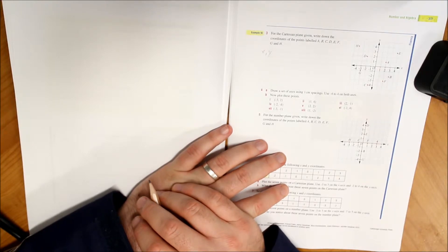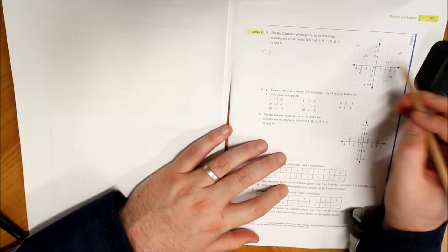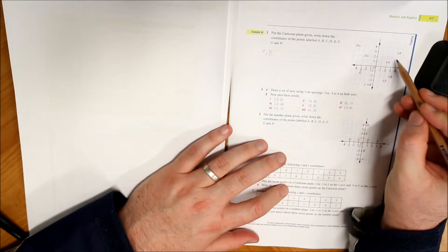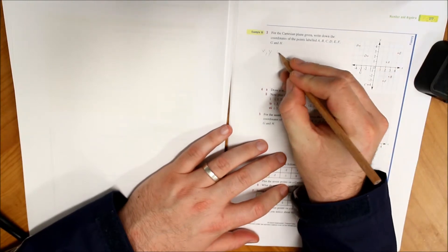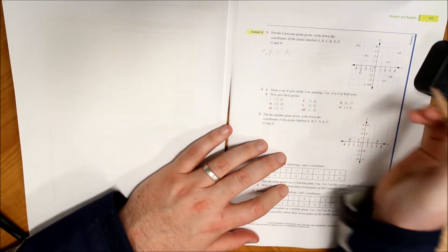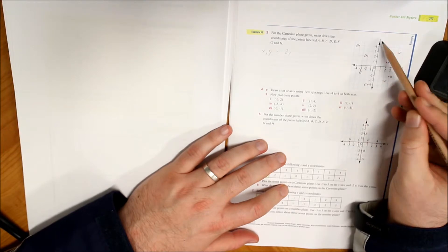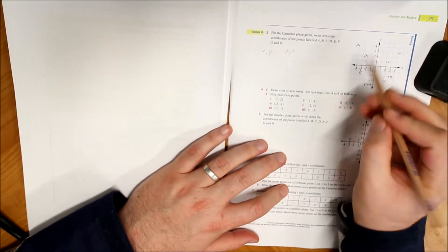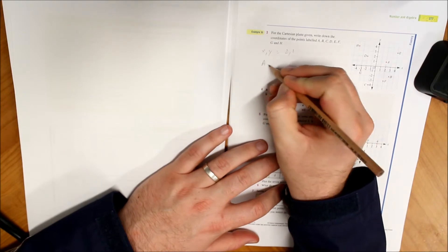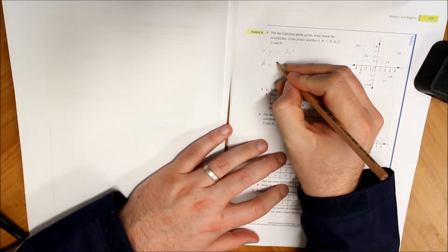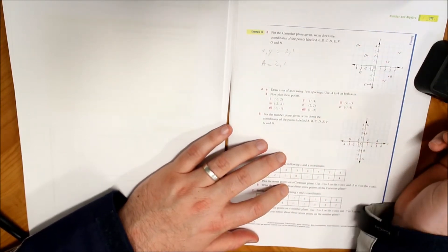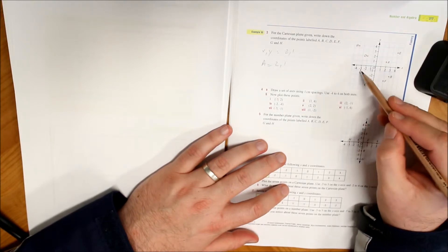So let's do a couple of them. All right, the x coordinate for A is two, comma, y is one. So we know that A's position on this Cartesian plane is (2, 1). All right, let's have a look at G.